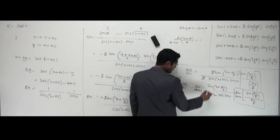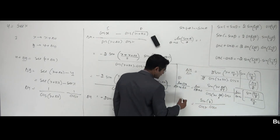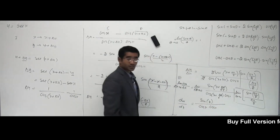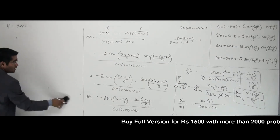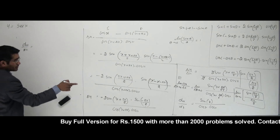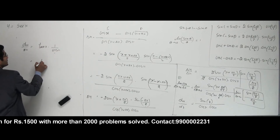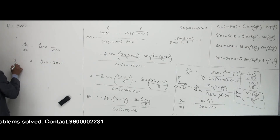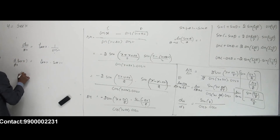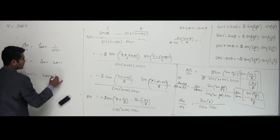Applying the limit, I get sin x over cos x times cos x. So dy/dx equals sin x over cos x times 1 over cos x. Now sin x over cos x is tan x, and 1 over cos x is sec x. So dy/dx equals tan x times sec x. Therefore, d/dx of sec x equals sec x times tan x. That's how it comes — a very simple problem.